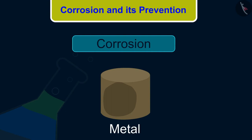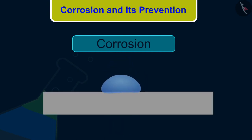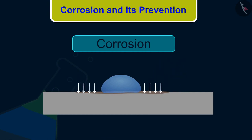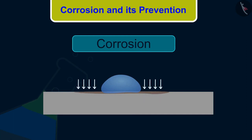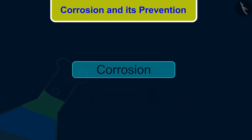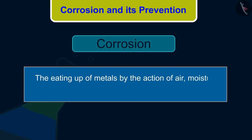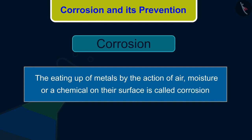In some metals like iron, these compounds are porous and gradually fall off from the surface, and then the metal underneath the surface is also attacked by these factors. The heating up of metals by the action of air, moisture or a chemical on their surface is called corrosion.